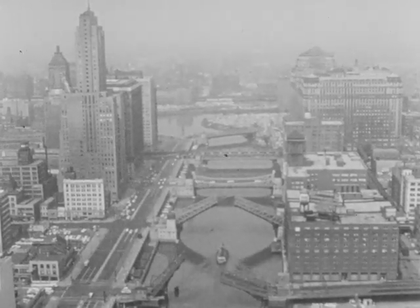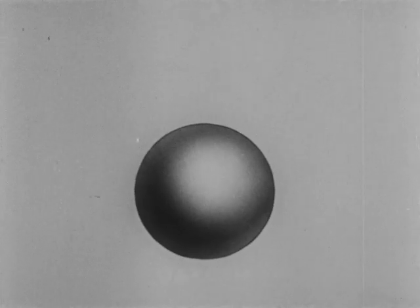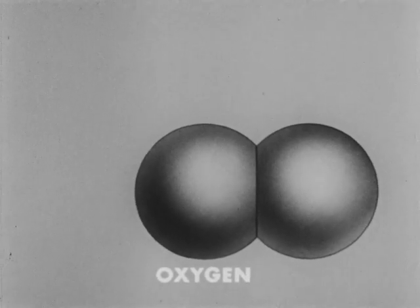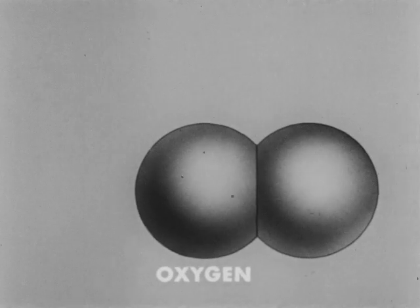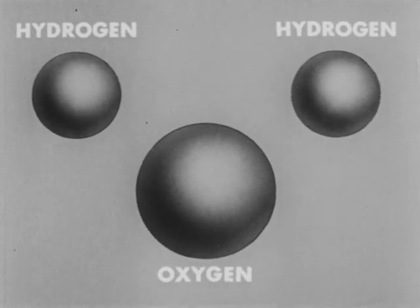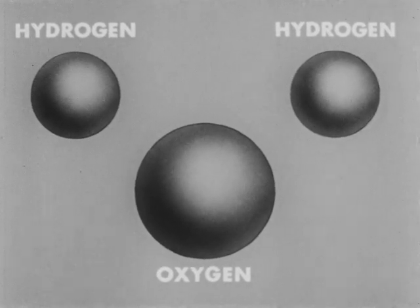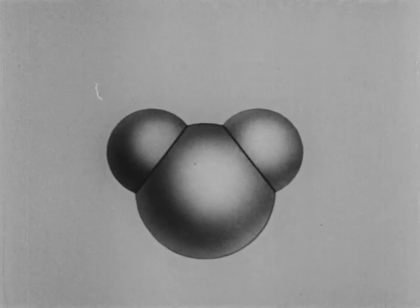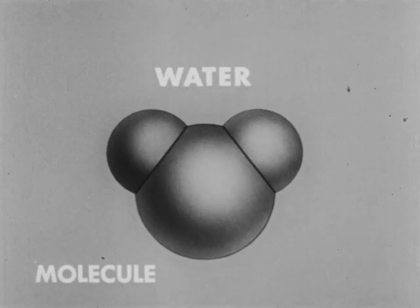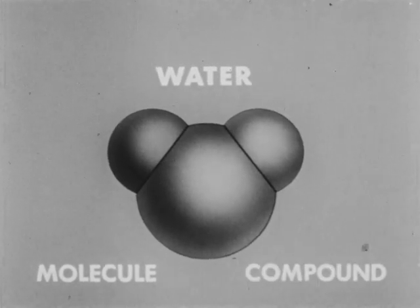Since there are only about 100 different kinds of atoms, how can there be so many different substances in the world? Let's imagine that we can make an atom large enough for us to see. We will call this atom oxygen, another element. Oxygen usually exists as two oxygen atoms joined together. This is a molecule of oxygen. Most elements exist as molecules. Sometimes molecules are made by joining different kinds of atoms. Here are two hydrogen atoms. We join the two hydrogen atoms with the oxygen atom. This gives us an entirely different kind of matter. This is a molecule of water. This molecule, made of different kinds of atoms, is a compound. Water is a compound.